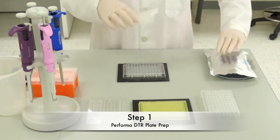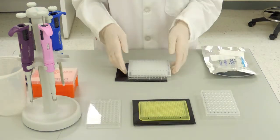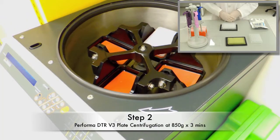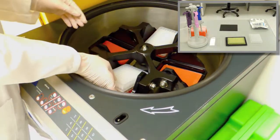The first step involves pulling the plate out of the foil pouch and removing the top and bottom plate sealers. The plate is then placed on top of the flat bottom waste plate and sent off for centrifugation at 850 Gs for 3 minutes.